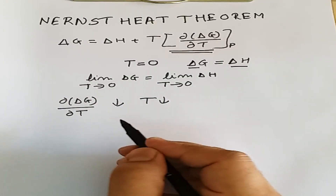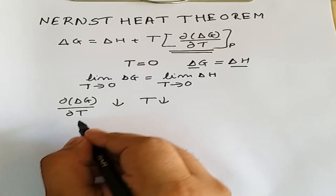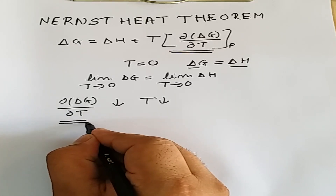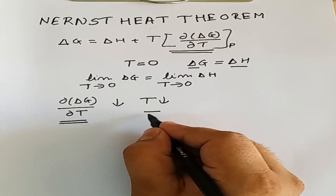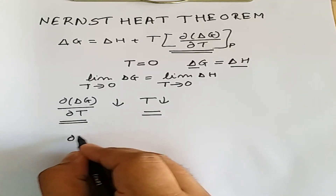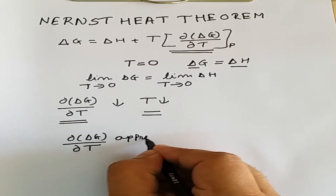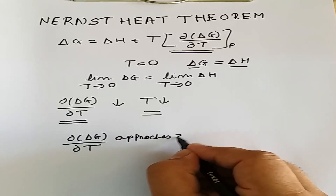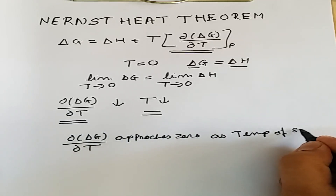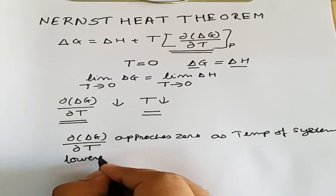On this basis, Nernst postulated the Heat Theorem. The Heat Theorem states that the value of dΔG/dT approaches zero as the temperature of the system moves towards absolute zero. That means dΔG/dT approaches zero as the temperature of the system is lowered towards absolute zero.